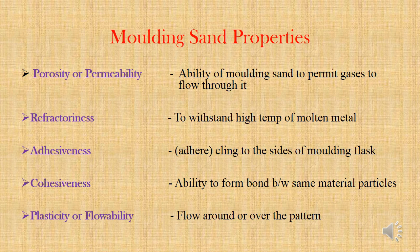We cannot blindly choose the molding sand — it should have some properties. First is porosity or permeability, which is the ability of molding sand to permit gases to flow through it. Molten metal contains some dissolved gases that will be evolved during solidification. For evolving these gases, porosity in molding sand is needed. Next is refractoriness, which is the ability of molding sand to withstand high temperature.